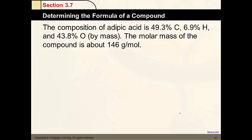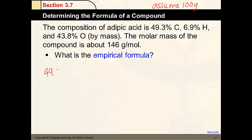Here's an example. We have this acid that's 49.3% carbon. We have hydrogen and oxygen as well. So what is the empirical formula? I'm going to assume 100 grams of the compound.